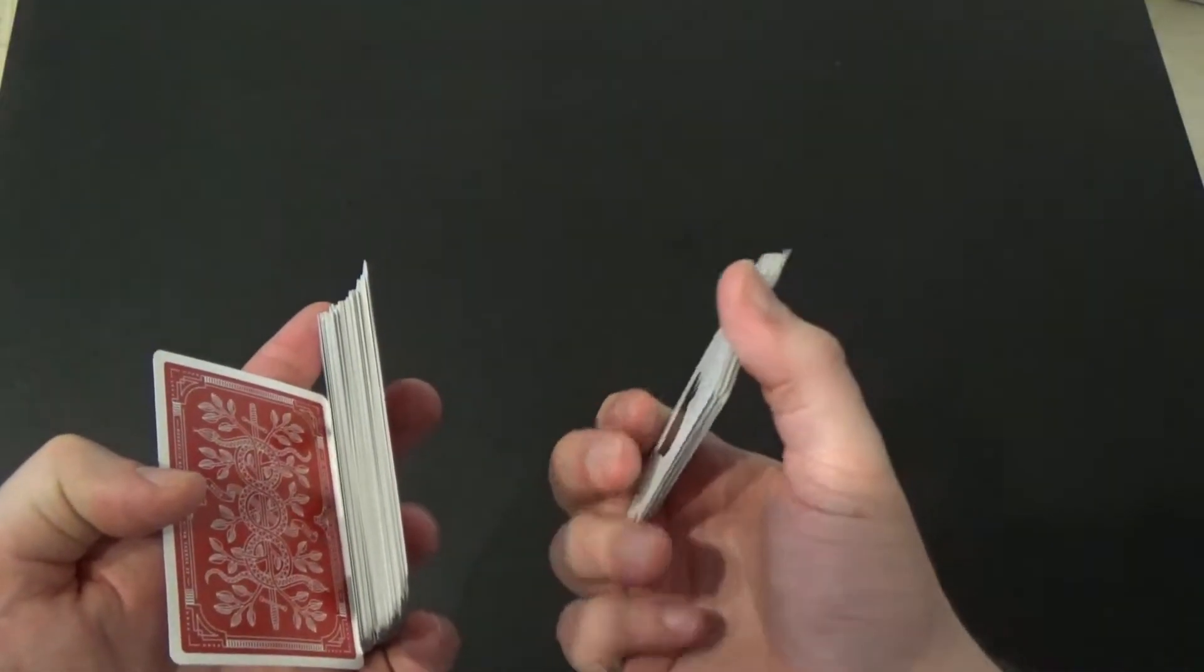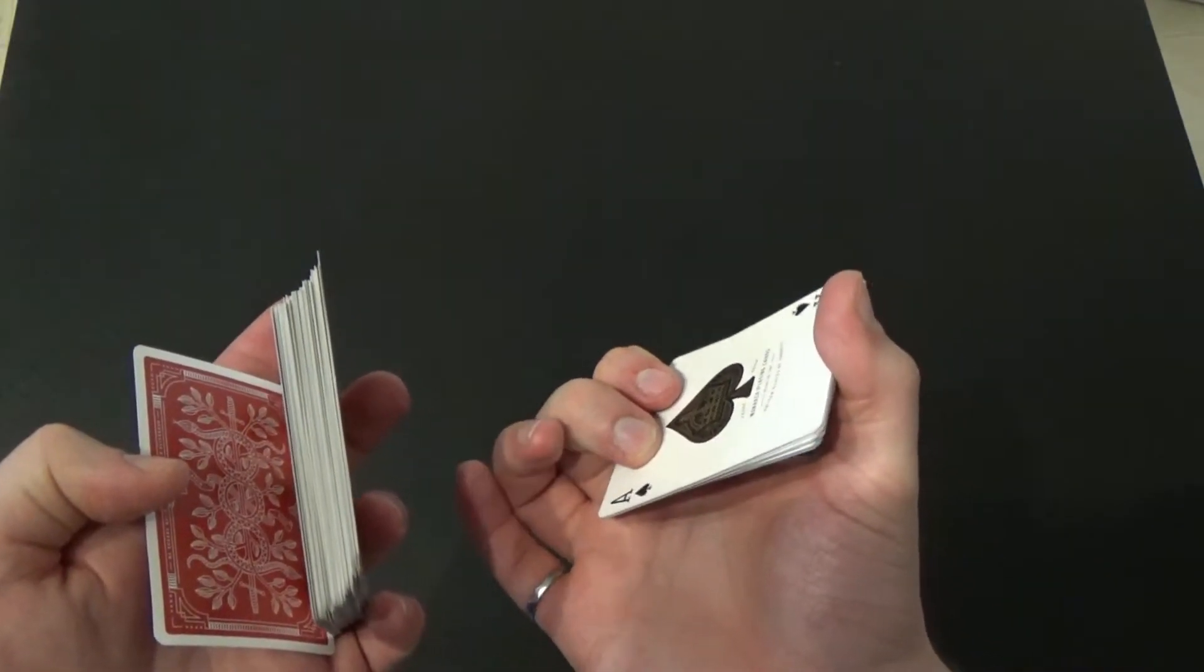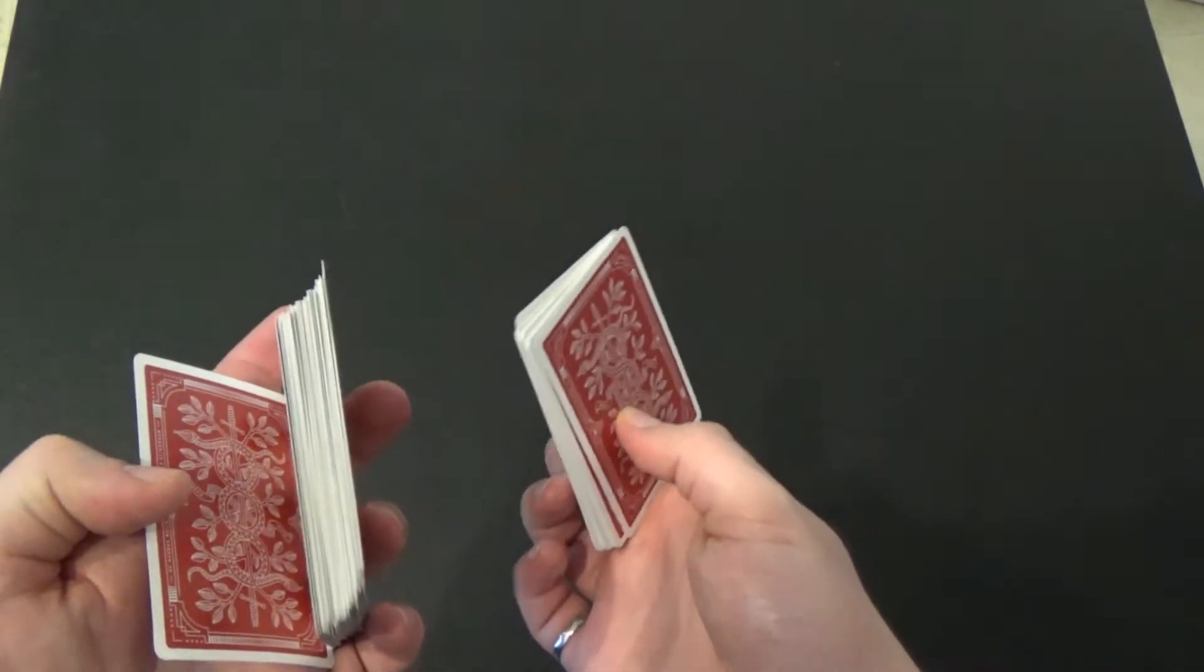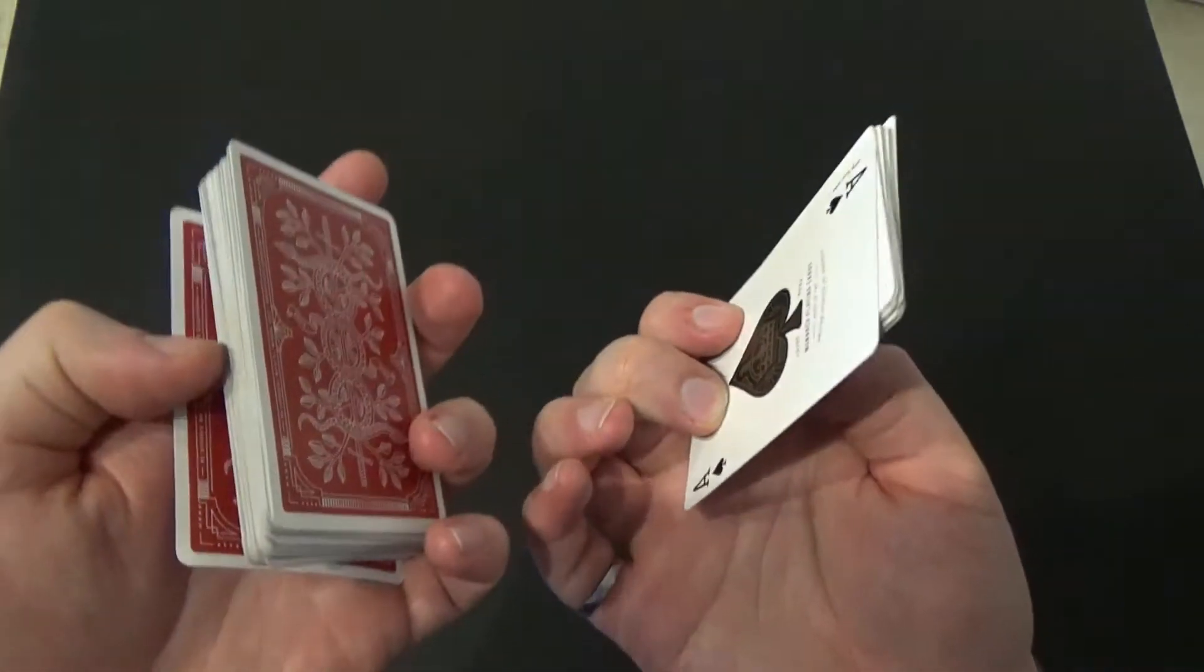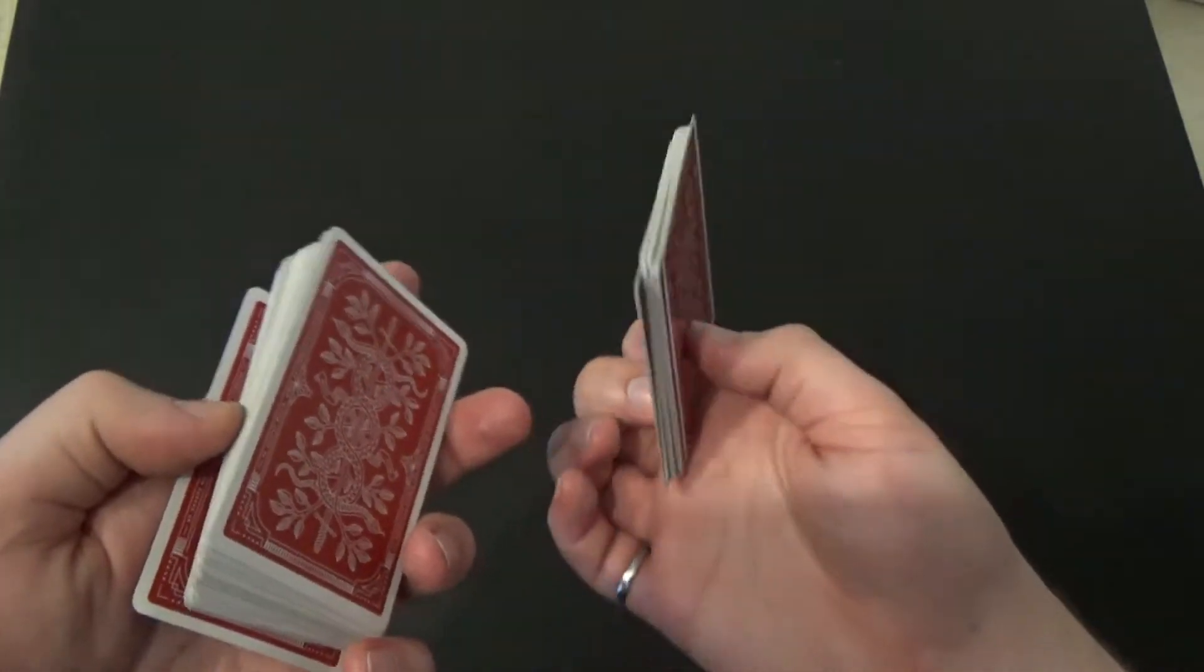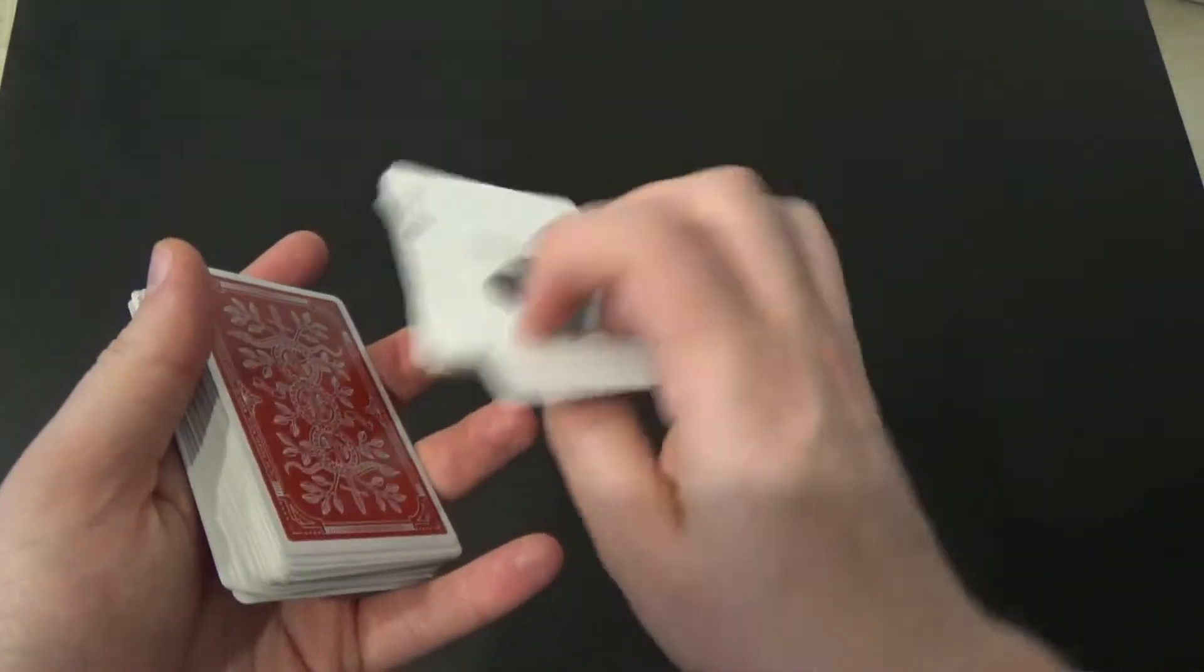The thumb slides the card underneath the deck. As that card's sliding underneath, you grab with the middle finger and pinch with the thumb, so you bring your thumb down and pinch this packet so it's held between the index finger, middle finger, and thumb. Then you rotate that packet around by rotating your wrist and closing in on top.